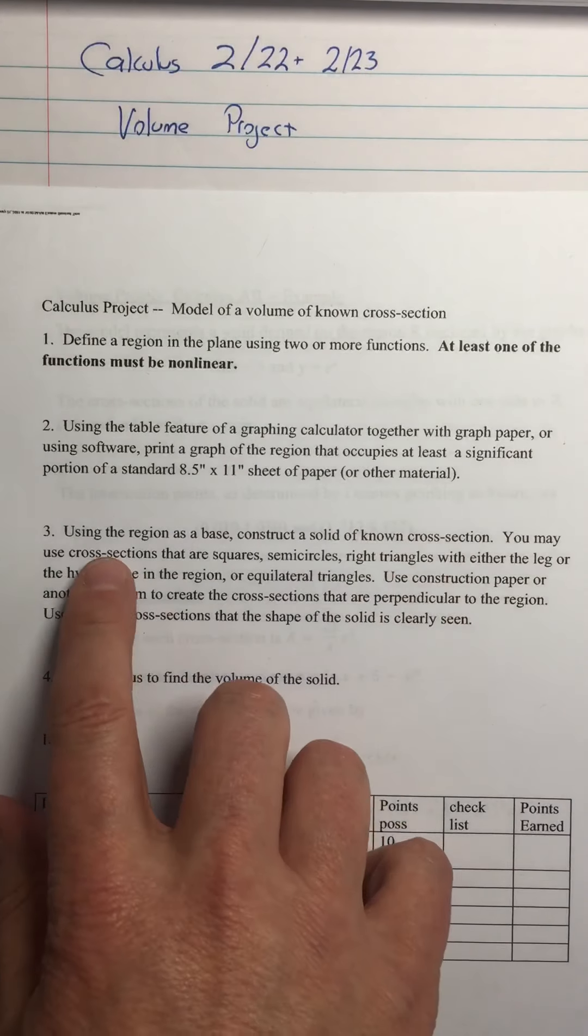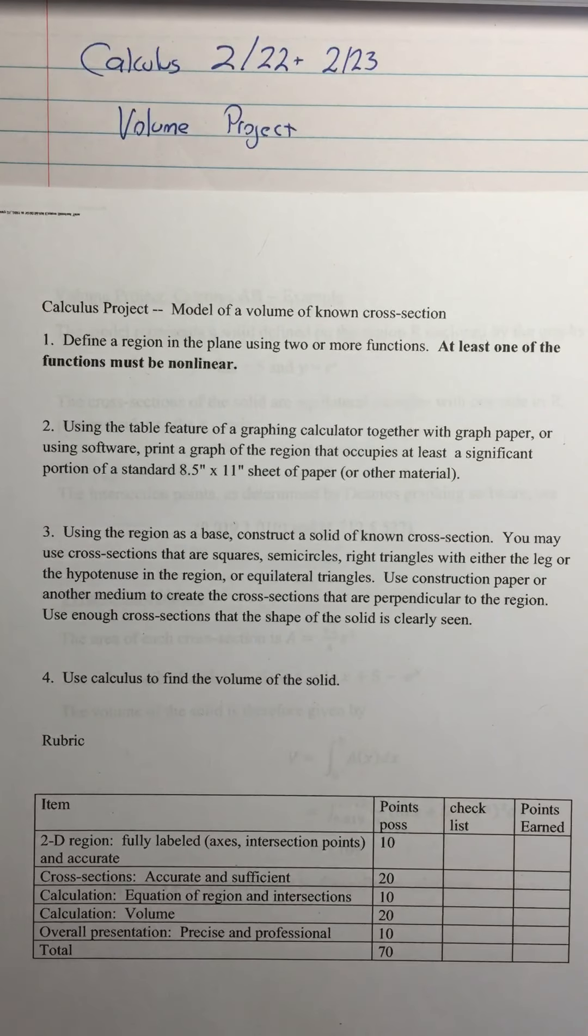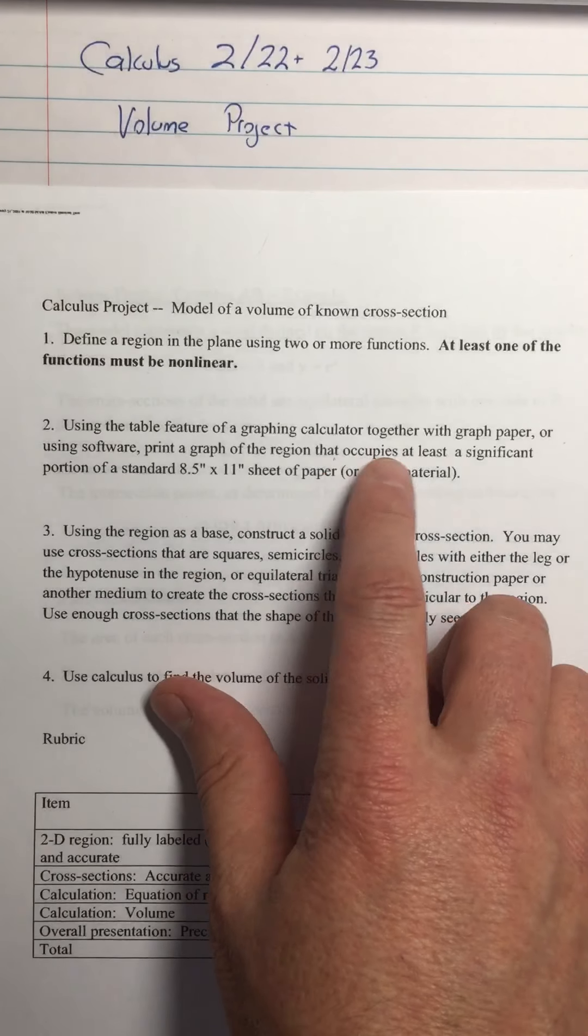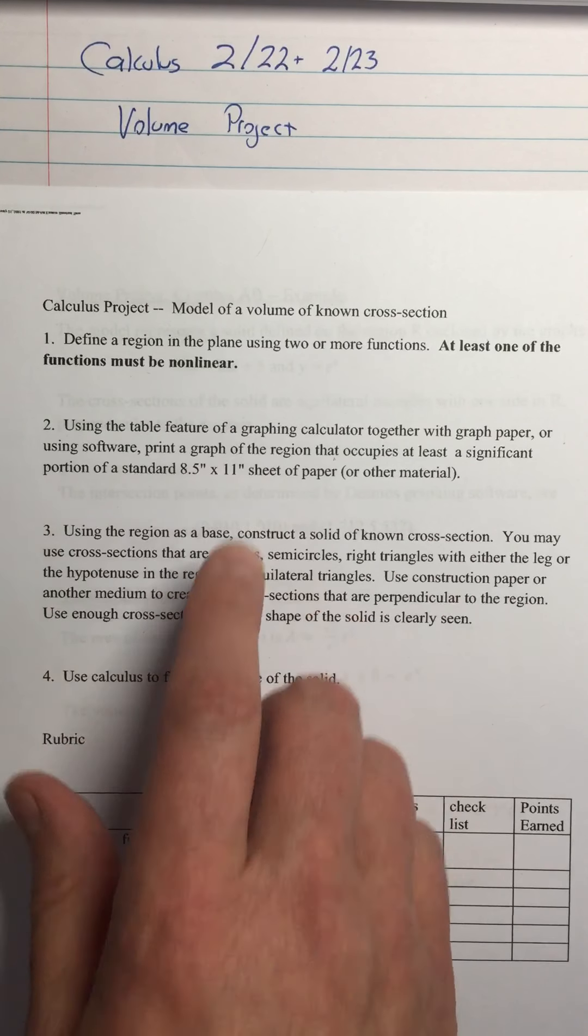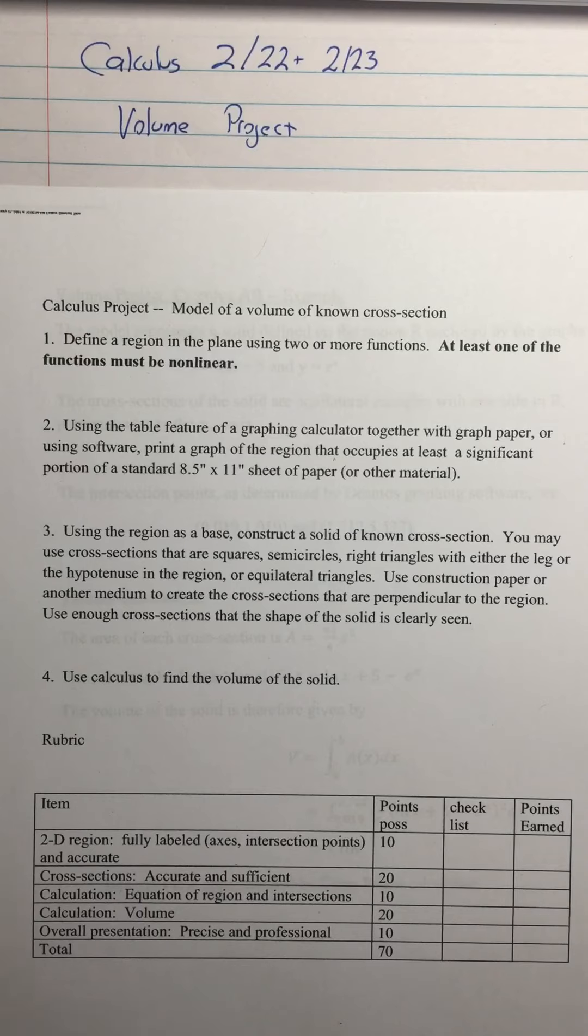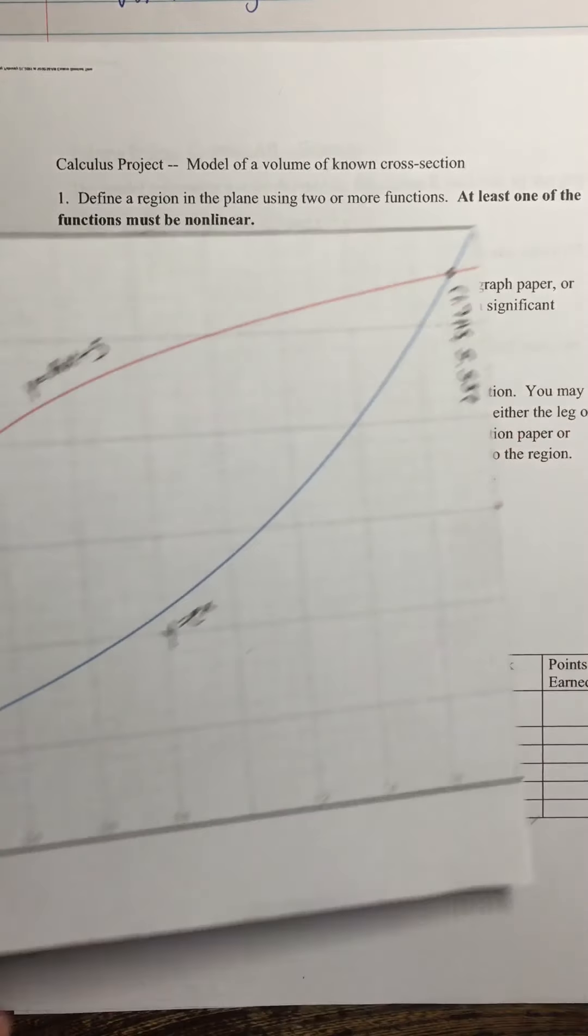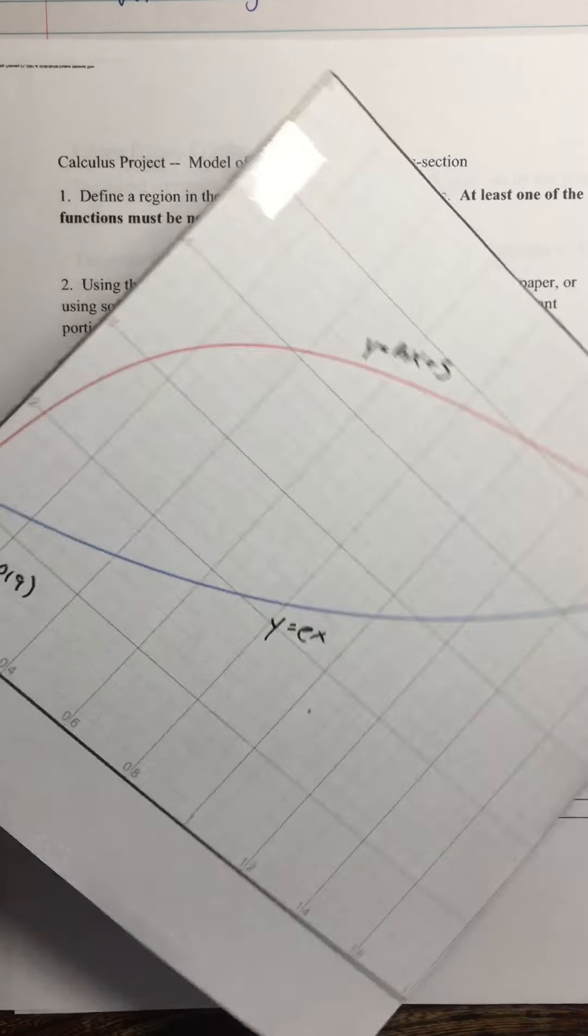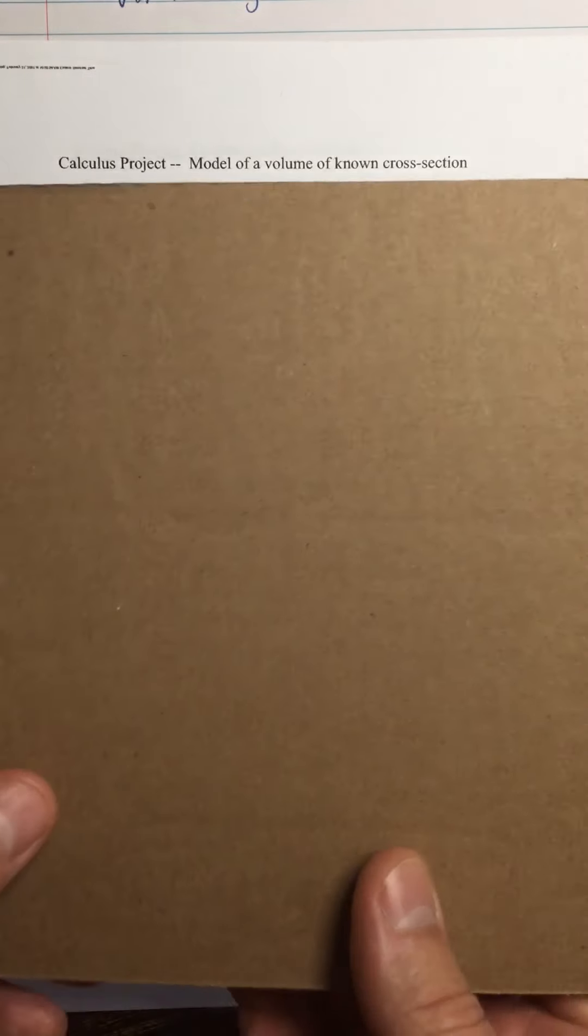So we're going to print that thing out. Your first step is basically to make one of these. It says at least a significant portion of an 8.5 by 11 sheet of paper. This paper is 8.5 by 11. Is that a significant part of it? Yeah.